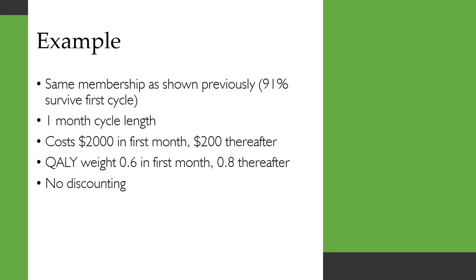So let's have that example again, the same membership that we had previously and an important thing to remember about that was that 91% of the cohort survived the first cycle. We'll say that that's a one month cycle length and the costs are $2000 in the first month and $200 thereafter and we are accruing QALYs with a QALY weight of 0.6 in the first month, 0.8 thereafter and in this example we won't include any discounting.